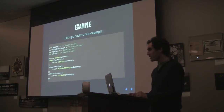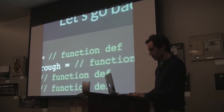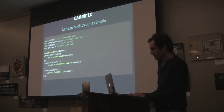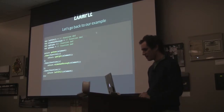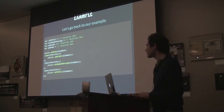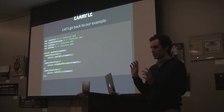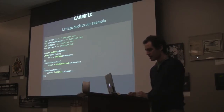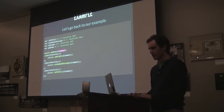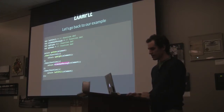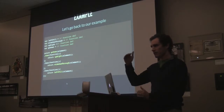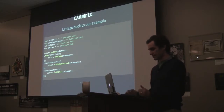Let's go back to our example and pretend we've converted our functions to promises already. Here's what the code looks like as a first step: we can say 'go down' and pass the element, then say 'return go upright', and when that's done 'go wide see-through', and when that's done 'go left full'. Already you can see this is getting more readable — there's no pyramid of doom, it's very sequential and easy to understand.